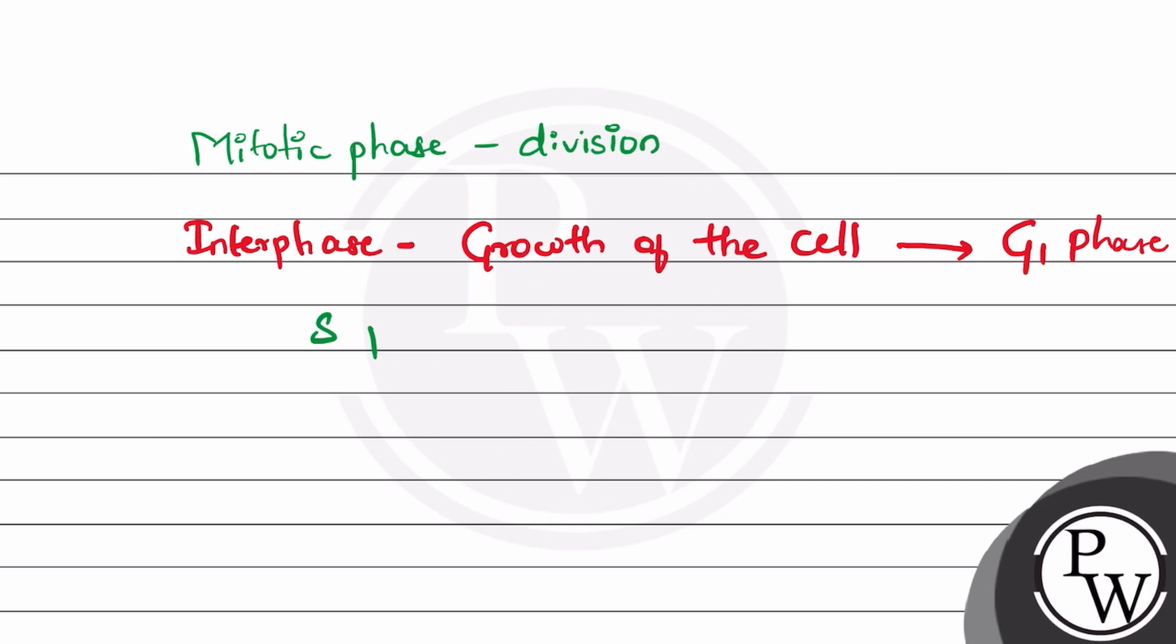And in S phase, synthesis occurs, meaning synthesis of DNA. The DNA in daughter nuclei occurs in double strands, so in S phase, DNA synthesis occurs to produce more DNA, which has to undergo cell division again. The DNA goes further and participates in cell division. So in S phase, synthesis of DNA occurs.